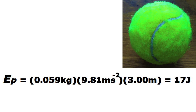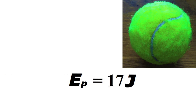So the ball's GPE can be calculated by multiplying 0.059 kilograms by 9.81 metres per second squared, and then multiplying by 3 metres. We're going to give our answer as a whole number with the correct unit, which is joules. So our answer to this question is 17 joules.